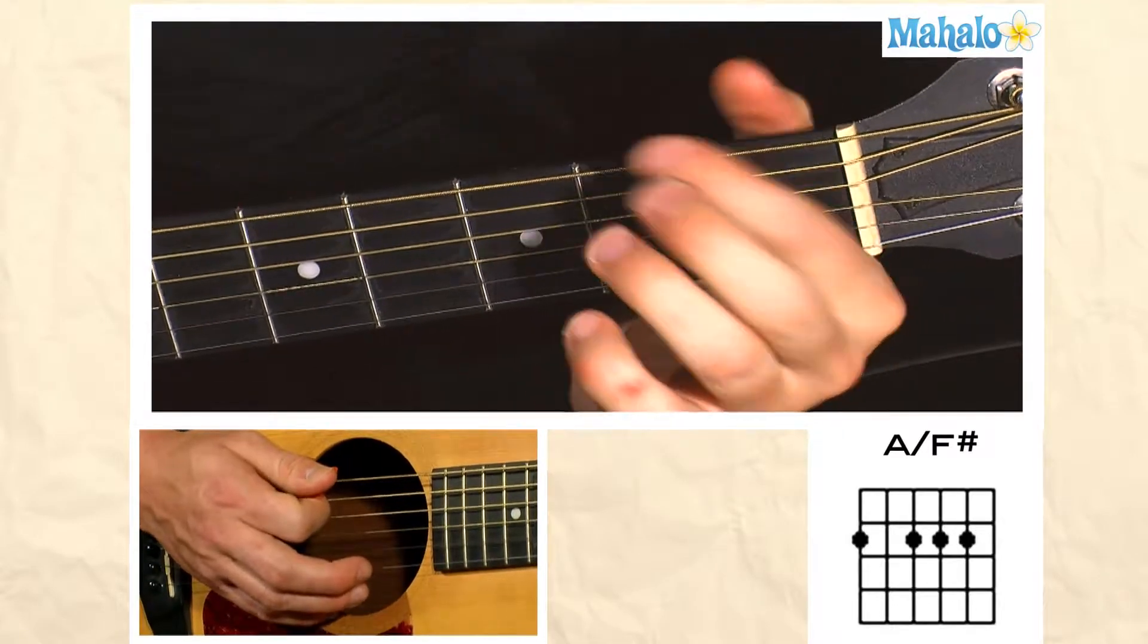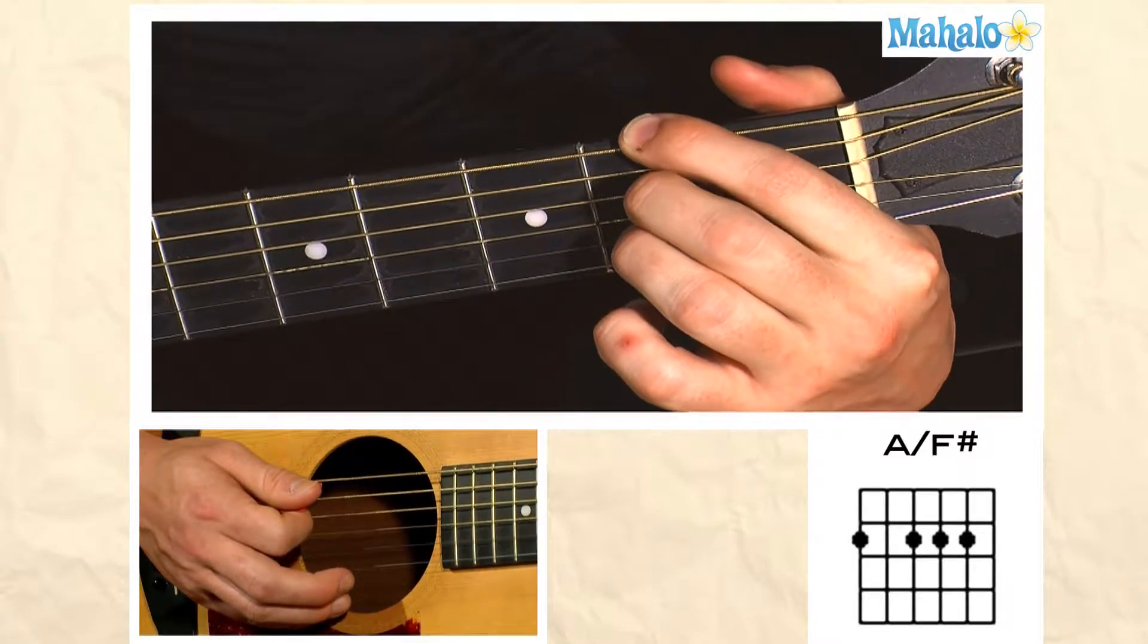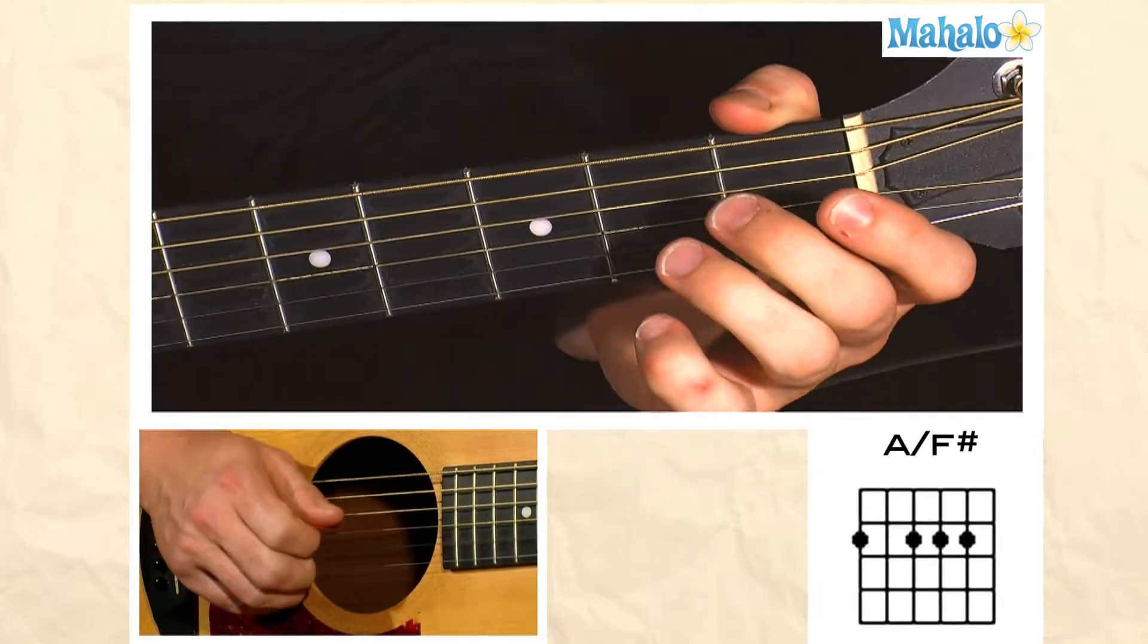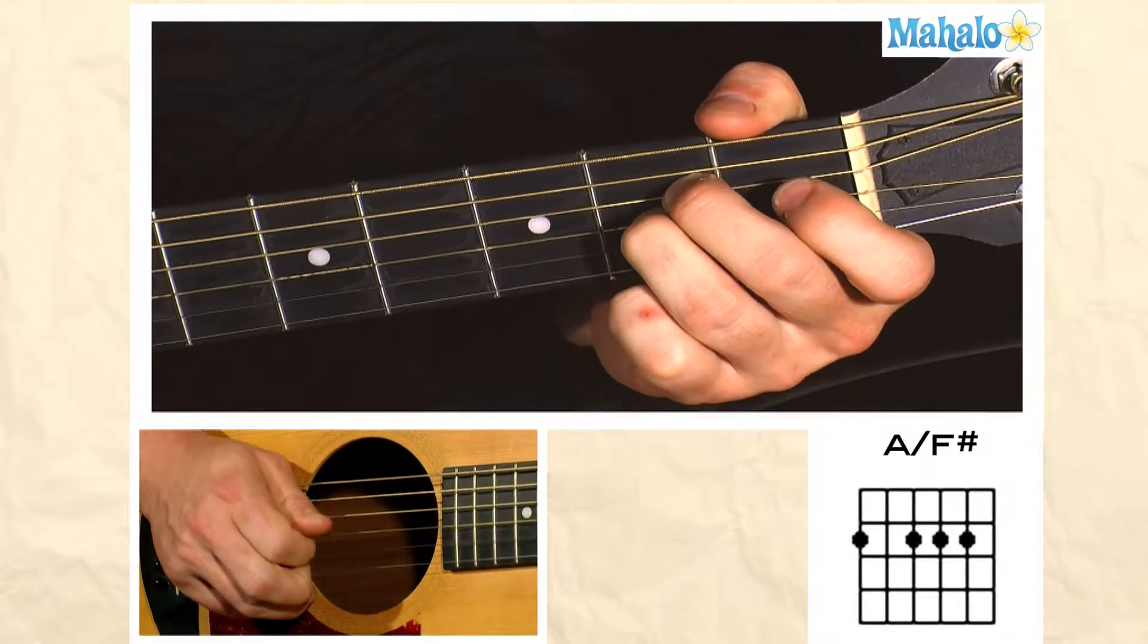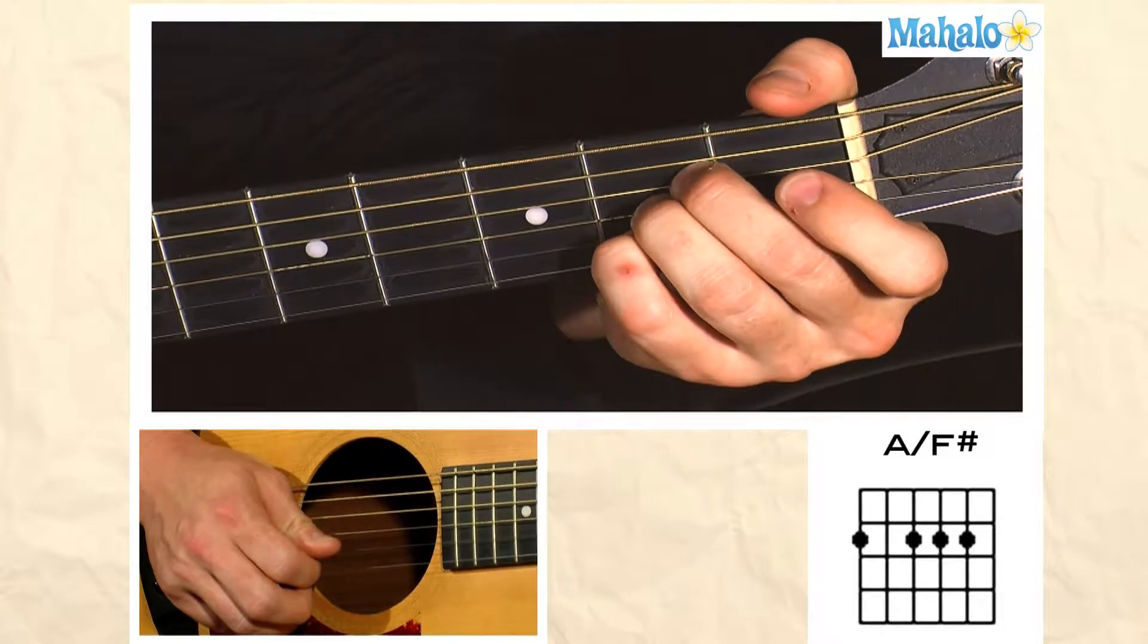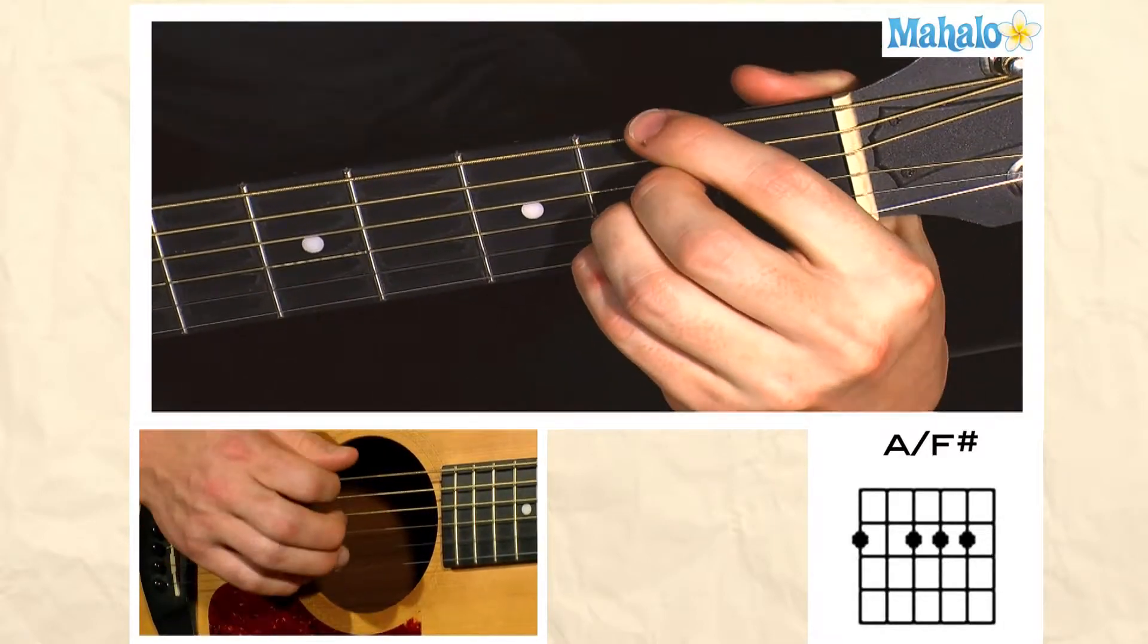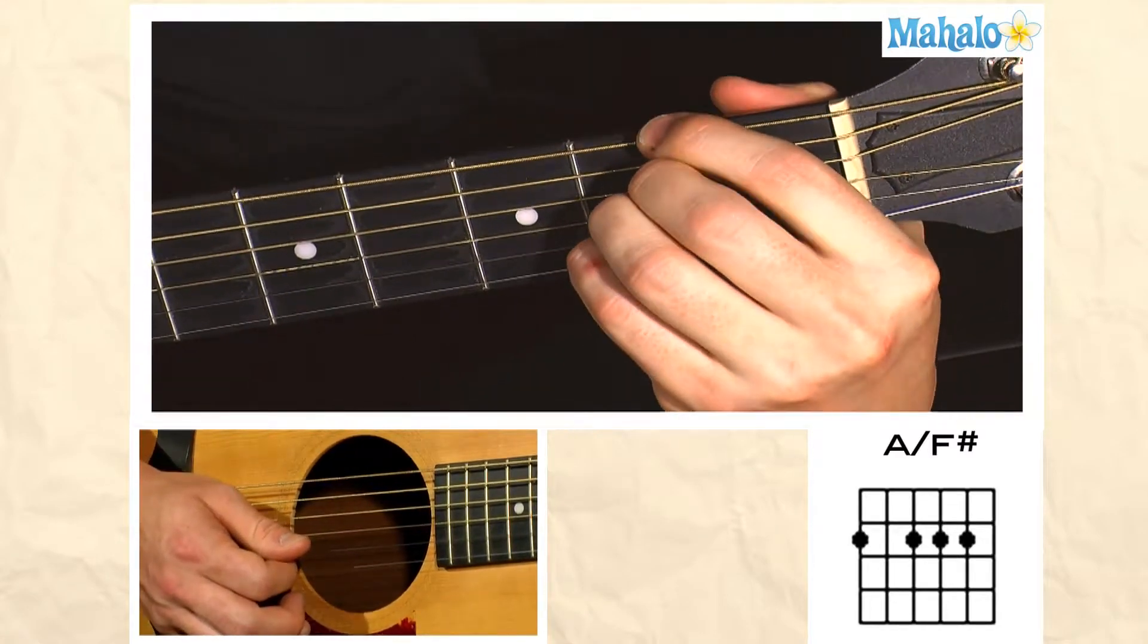I'm using my first finger for the F sharp, and then everything else is on the second fret starting on the D string. Second finger, second fret D string. Third finger, second fret G string. And lastly, the little pinky on the second fret. You have to fit all four fingers in this second fret. It's a little bit of a stretch.